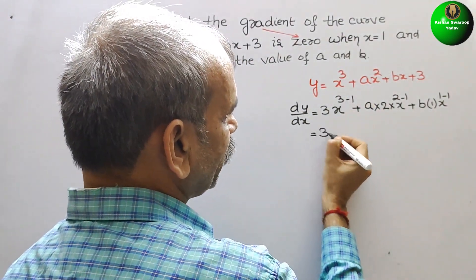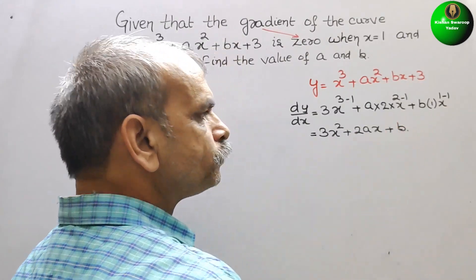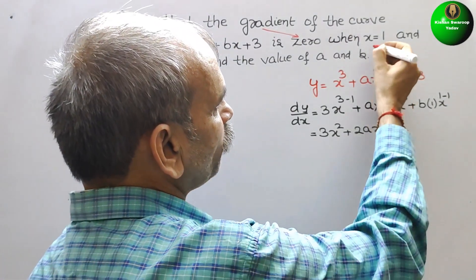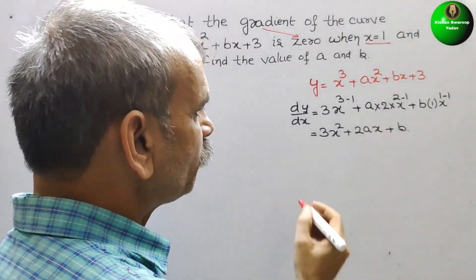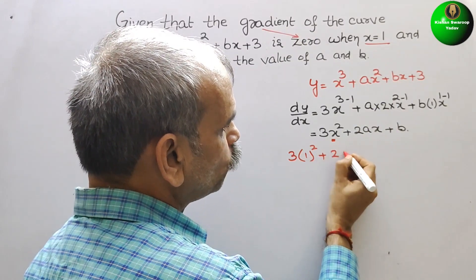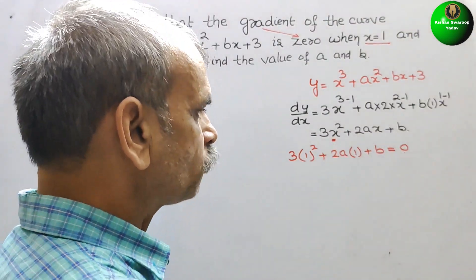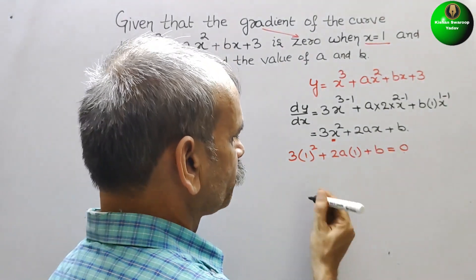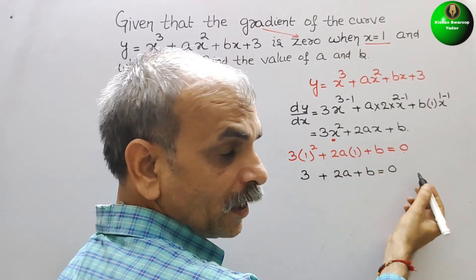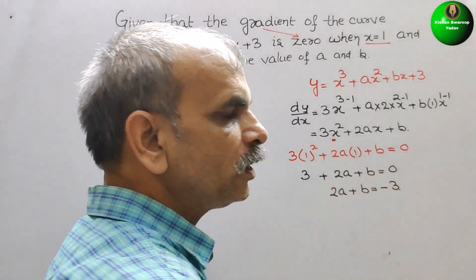The constant term becomes 0. So dy/dx equals 3x squared plus 2ax plus b. Now they have told us that if we put x equals 1, we get gradient equals 0. So substituting x equals 1: 3 times 1 squared plus 2a times 1 plus b equals 0. Solving this: 3 plus 2a plus b equals 0, so 2a plus b equals minus 3. This is our first equation.